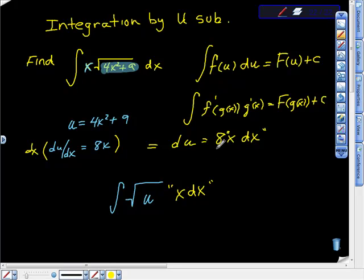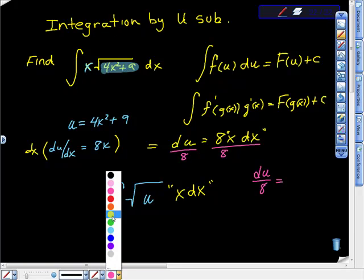So if you don't mind, I'm going to divide this by 8. So I'm going to divide both sides by 8. And if I do that, I'm going to get that du over 8 is equal to x dx.